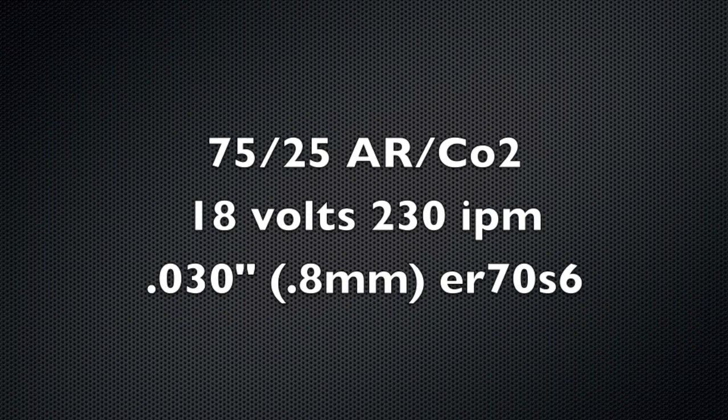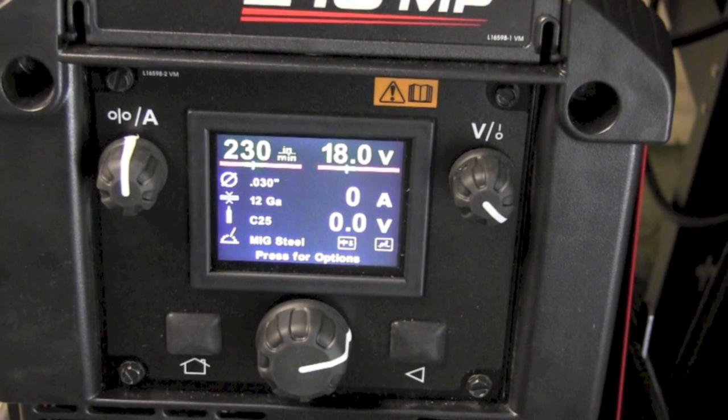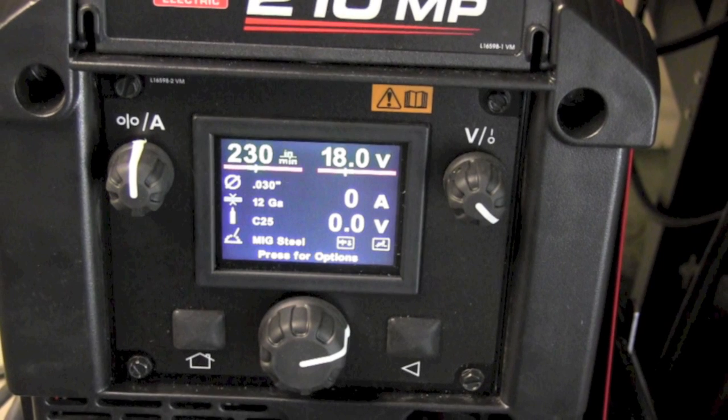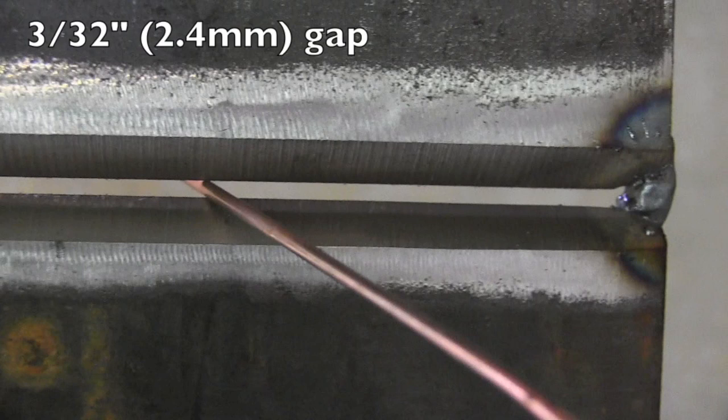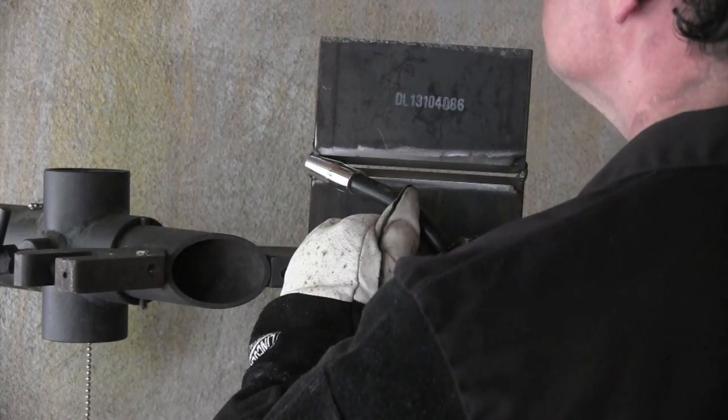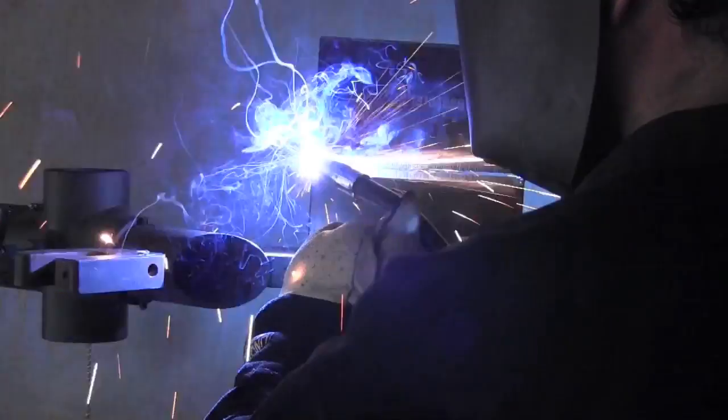It's a horizontal position using short circuit MIG. First up, we're going to use 75-25 gas, 75 argon, 25 CO2 at 18 volts, 230 inches a minute. That's kind of low, but I want to compare and keep them kind of the same and just prove that a good looking weld isn't always a good weld.